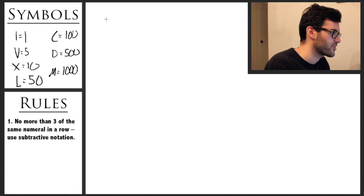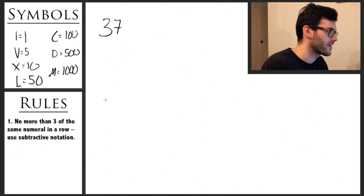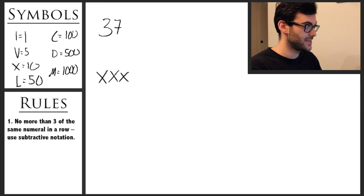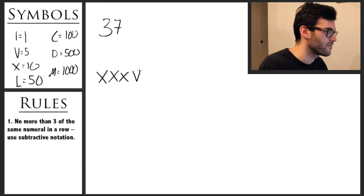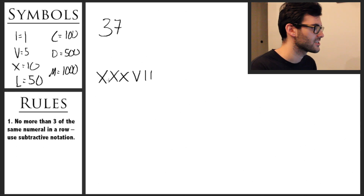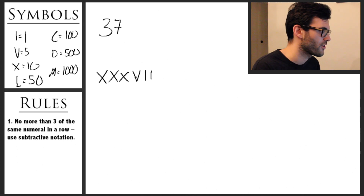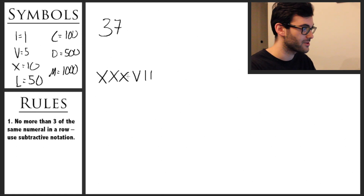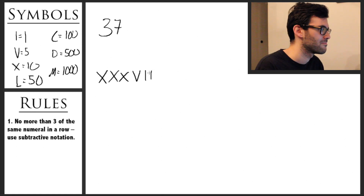So let's say we were trying to write the number 37. We would say XXX for 10, 10, 10, and then VII for 5, 1, 1. This doesn't use any more than three of the same numeral in a row — XXX is three, no more, then V, I, I — so that's 37 right there.